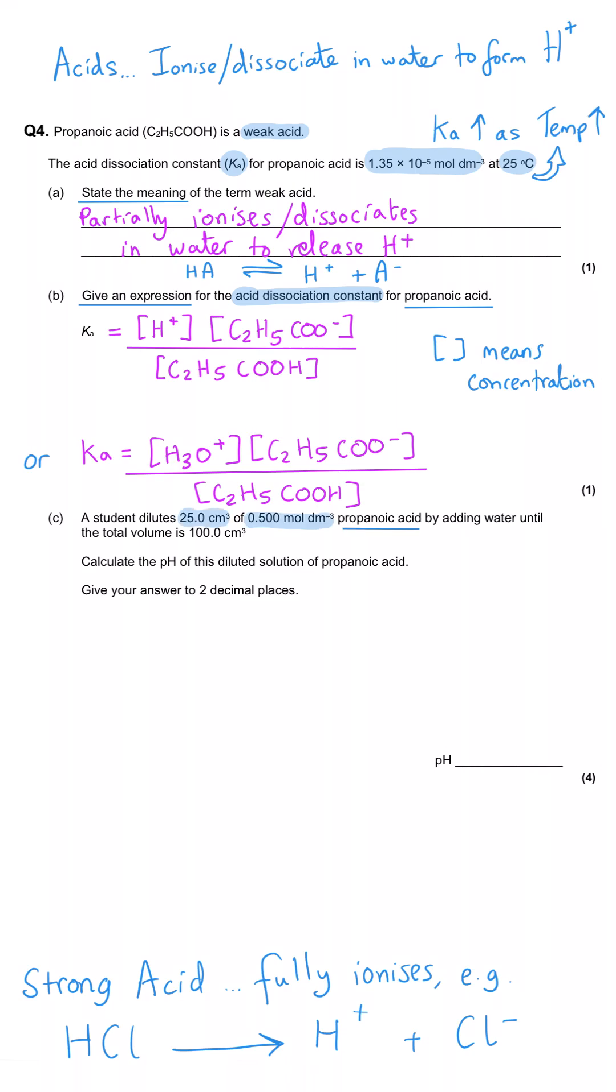we are told that a student dilutes 25 cm3 of 0.5 moles per decimetre cubed propanoic acid by adding water until the total volume is 100 cm3. Calculate the pH of this diluted solution of propanoic acid. Give your answer to two decimal places.